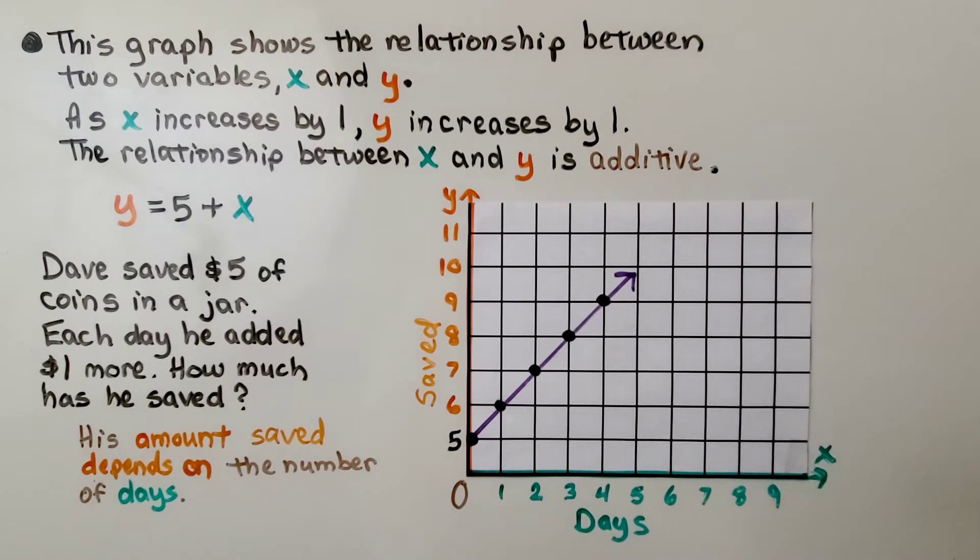This graph shows the relationship between two variables, x and y. As x increases by 1, y increases by 1. The relationship between x and y is additive.